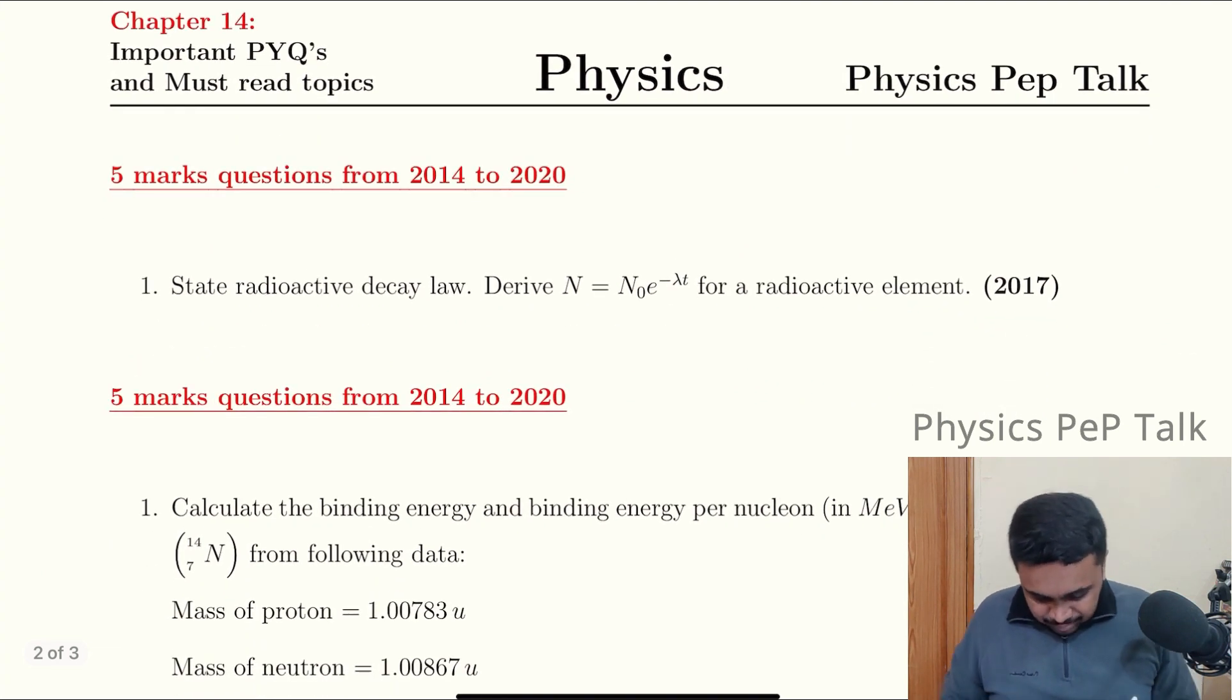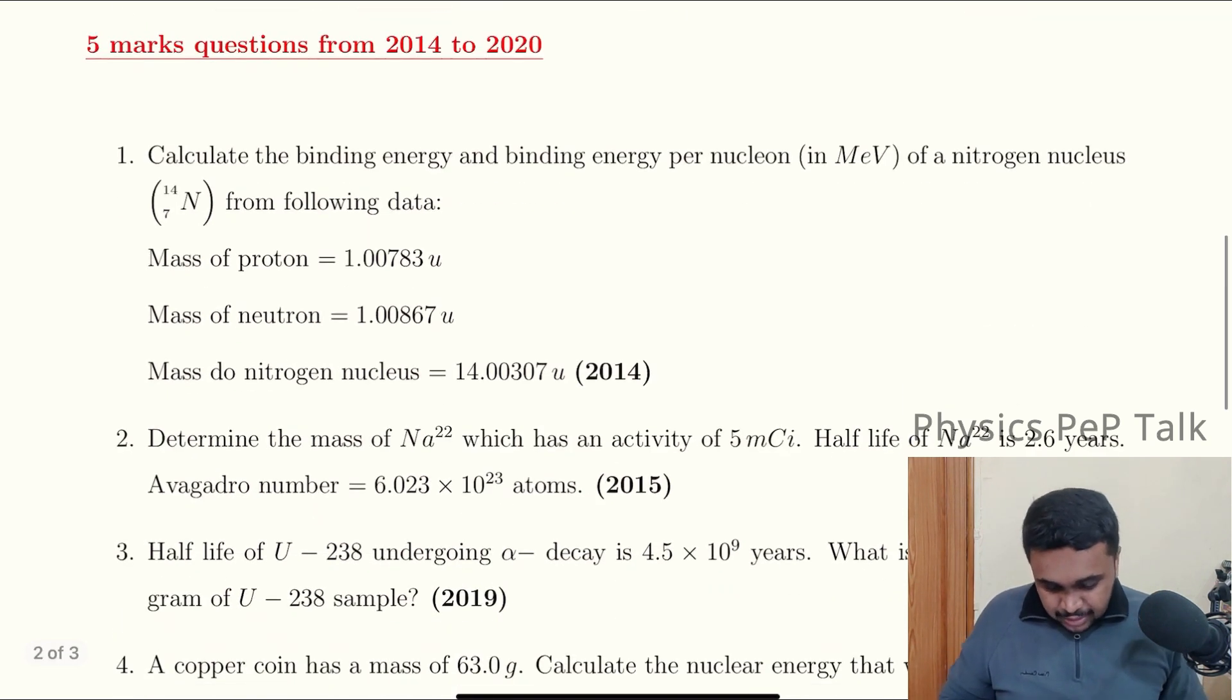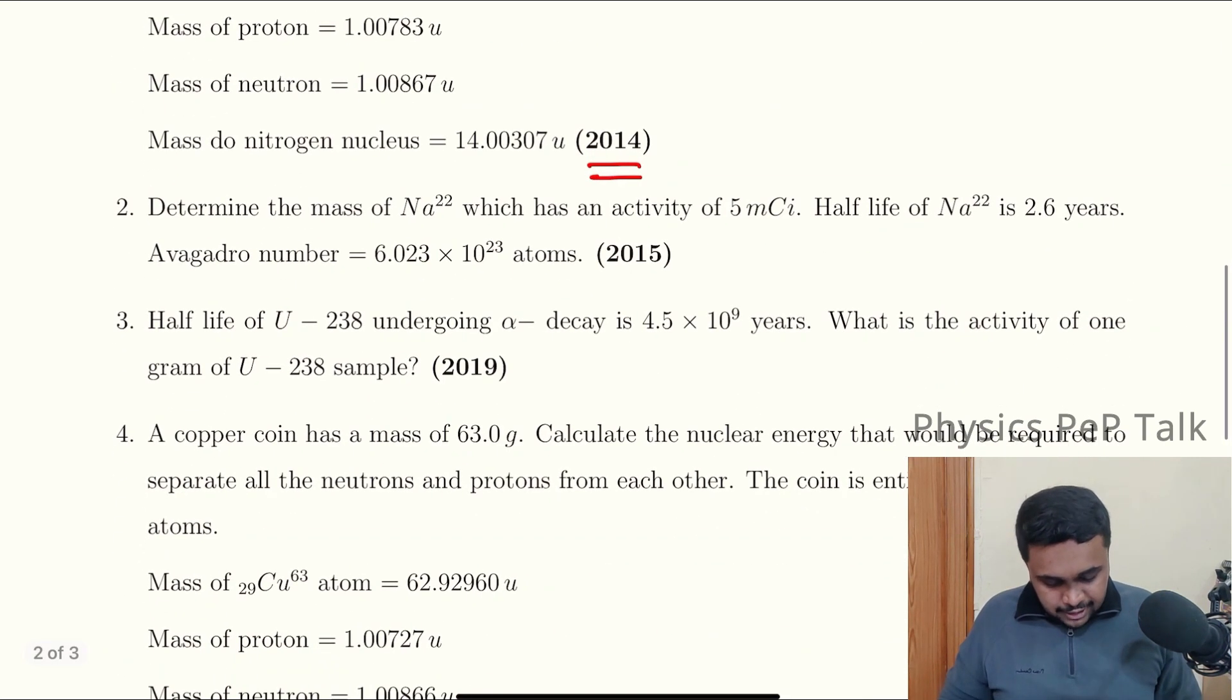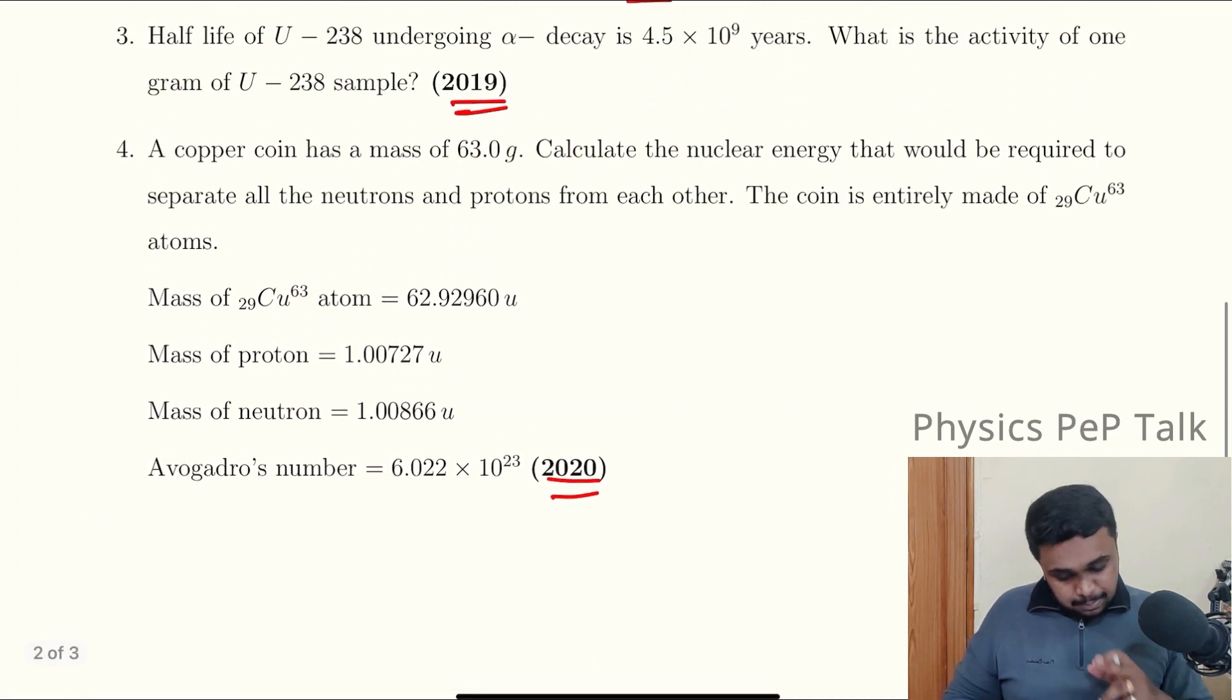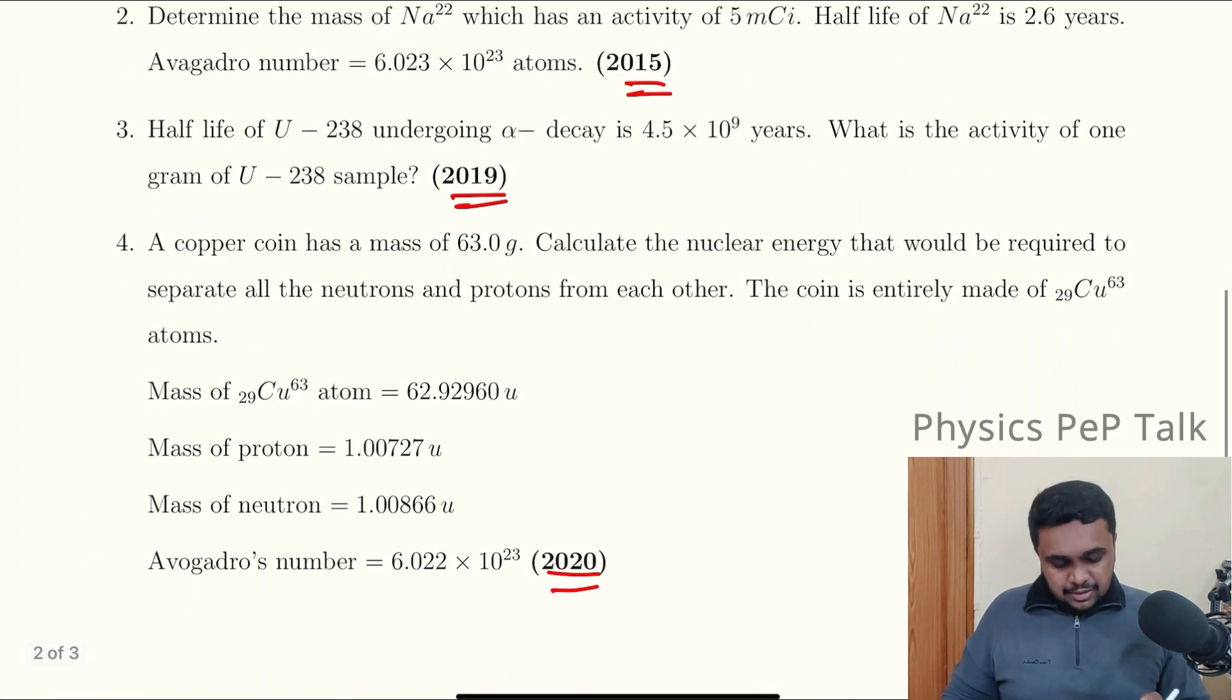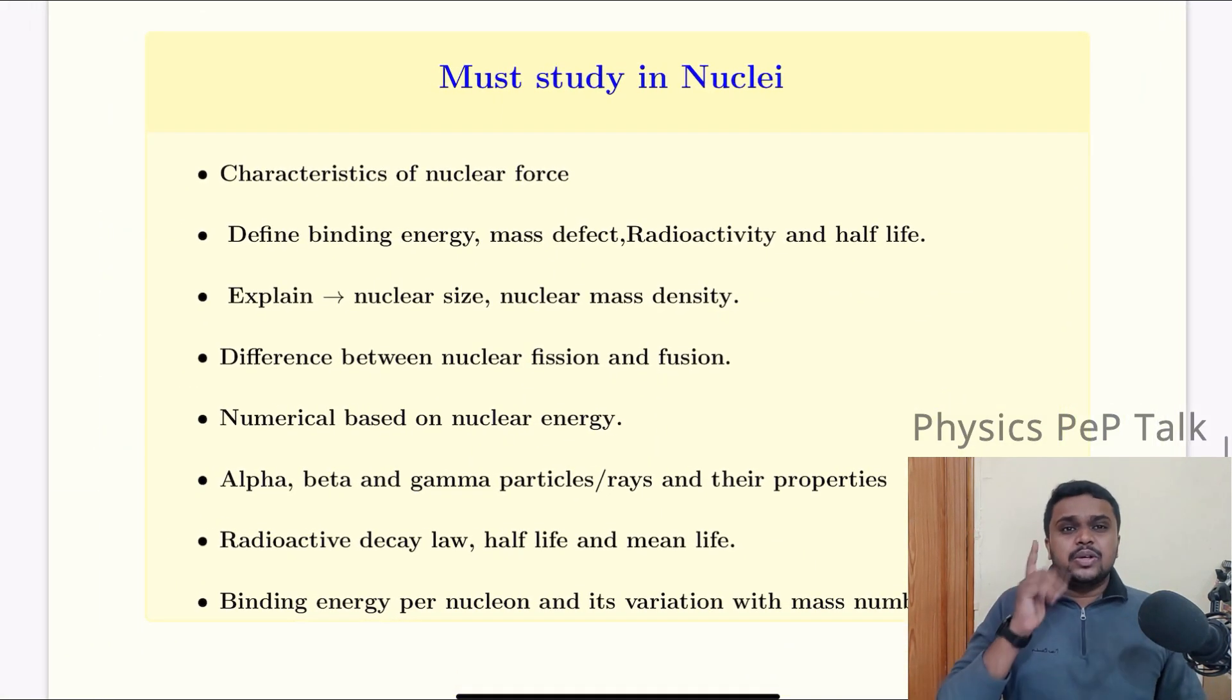Five marks: State radioactive decay law and derive N equals N naught e power minus lambda t. This derivation is from 2017. This is the five mark derivation. In our channel I have done this. Check the playlist for five marks, six marks derivations.